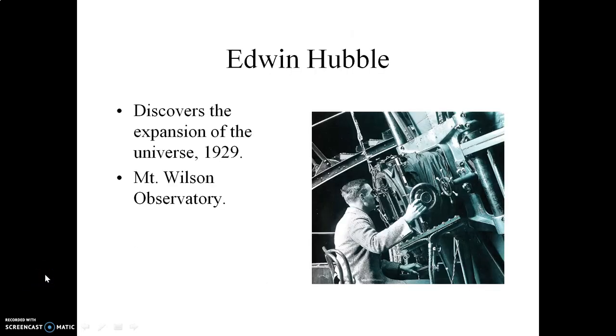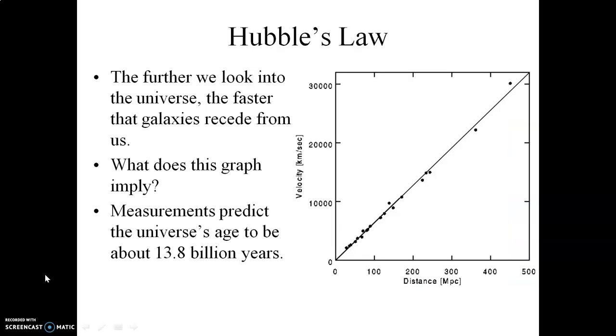And then still in the 1920s, we have the observations made by the American astronomer Edwin Hubble. Edwin Hubble, one of the reasons why he's so famous, is because he discovered that the universe, in fact, is expanding. He made these discoveries at Mount Wilson Observatory, which is just north of Pasadena, here in Southern California. Hubble discovered what is referred to as Hubble's law. The further that we look out into the universe, the faster that we see galaxies recede from us.